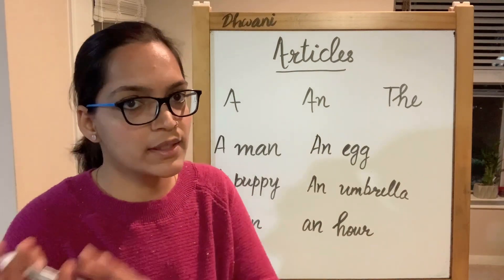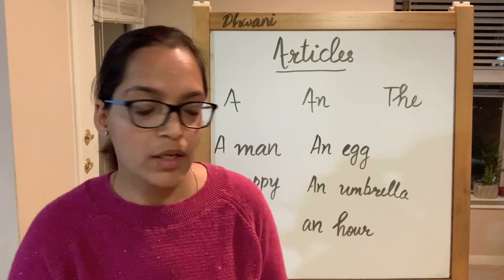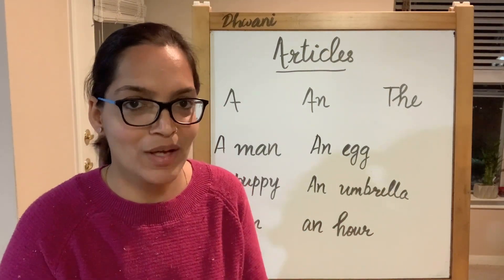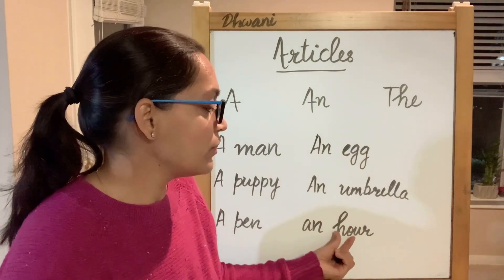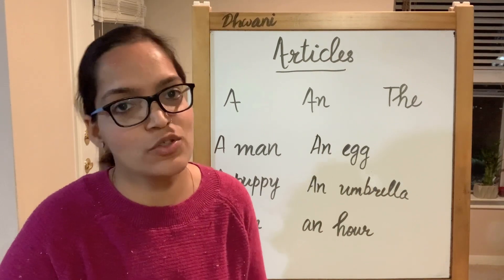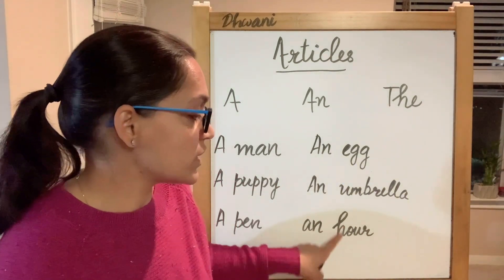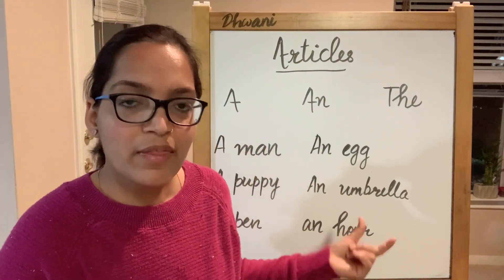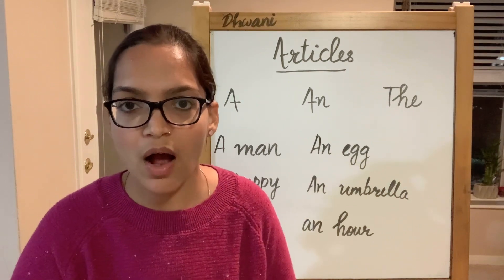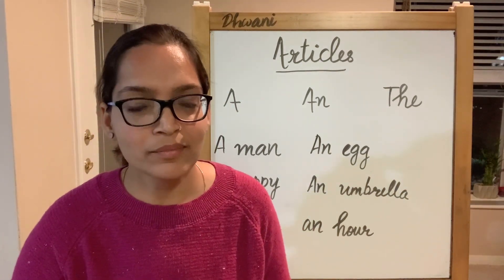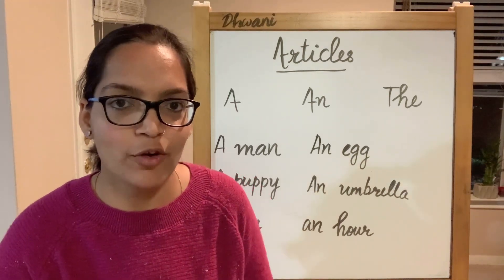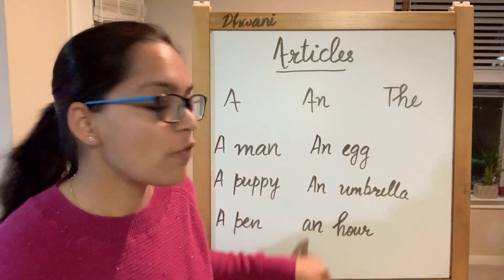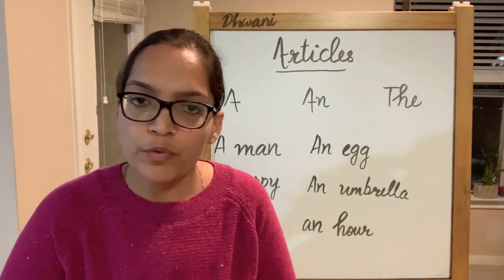Another example would be 'an hour.' Now you might say there's an h here. When I say 'an h,' the h makes a vowel sound — that's why we use an. The same applies here: the first sound you hear is the vowel sound. We're not just looking at whether the first letter is a consonant; we are listening to the sound the word makes. The first sound I hear in 'hour' is a vowel sound, so it's going to be 'an hour.' It is a little confusing at the beginning, but you'll get the hang of it. An is used before the vowel sound.